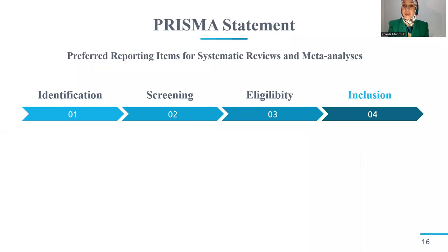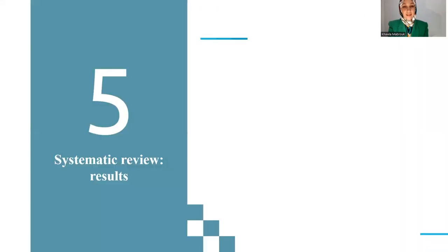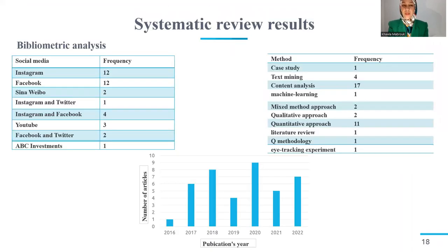The final step is inclusion. For data extraction, we used NVivo for encoding interesting paragraphs and Excel for synthesizing results. To analyze our findings in depth, we used bibliometric analysis, and some examples of bibliometric analysis tables are shown here.